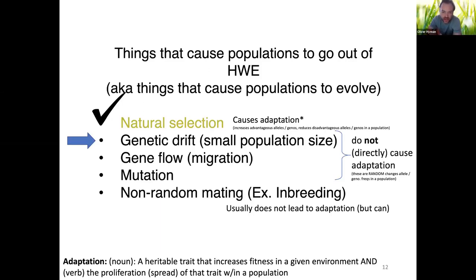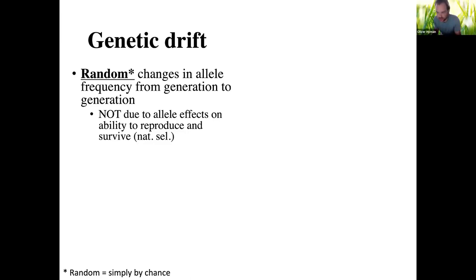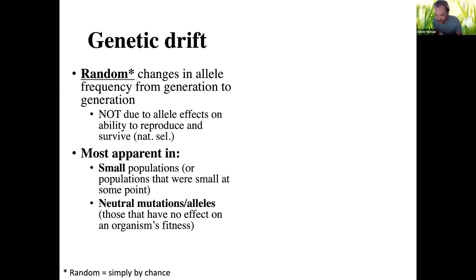Now let's talk about genetic drift — random changes in allele frequency from generation to generation. These random changes have nothing to do with the allele's effects on an individual's ability to survive and reproduce. The alleles that get passed from generation to generation in genetic drift are random by chance, not because of any advantageous trait. We see genetic drift most often in small populations and most often with neutral alleles or mutations — ones that don't have any effect on an organism's fitness.